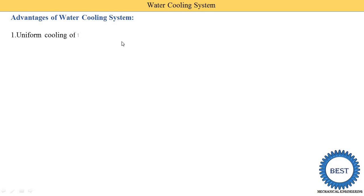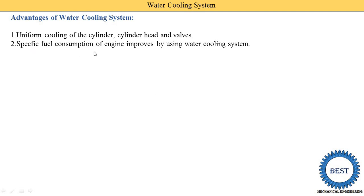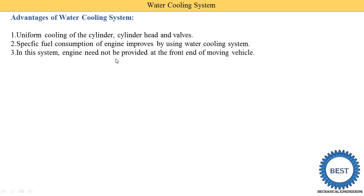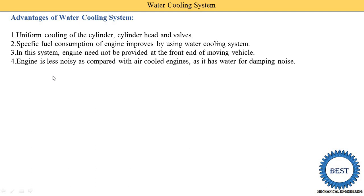First we understand the advantages of water cooling system. It provides uniform cooling of the cylinder, cylinder head, and valve. In an air cooling system the disadvantage is that non-uniform cooling is produced because the circulation of air is different in different parts of the engine. Specific fuel consumption of an engine improves by using the water cooling system. In this system the engine does not need to be provided at the front end of the moving vehicle — we are also able to install the engine on the rear part of the vehicle. The engine is also less noisy compared with air-cooled engines, as the water dampens and absorbs some quantity of the noise.